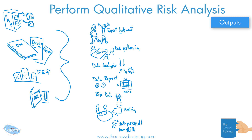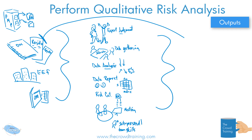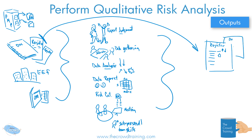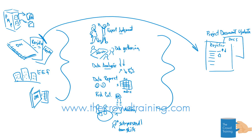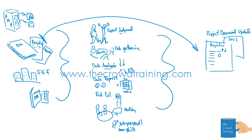Lots of different tools and techniques — and it all gets easier because the output is just one. This risk register at the beginning is what we are trying to elaborate on, add more to, and expand upon based on our identification of how impactful these risks are. Yes, there could be other documents that are also updated, but really the output is your project document updates. That is a quick review of the inputs, outputs, tools, and techniques of the Perform Qualitative Risk Analysis from Crowd Training. When we do the quantitative risk analysis, you'll see it's pretty similar, though the methodology might be slightly different.